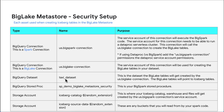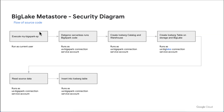We have our taxi dataset — this is where our tables will reside, so our BigLake tables will be created here so we can query our Iceberg tables directly in BigQuery. We also have our stored procedure, a storage account for our catalog, and a storage account for source data.